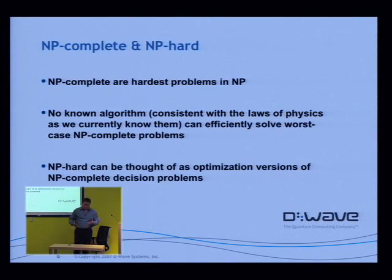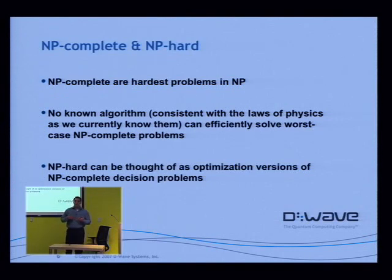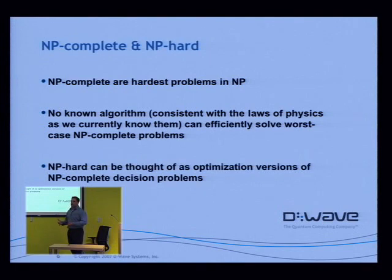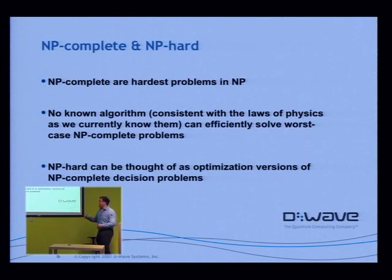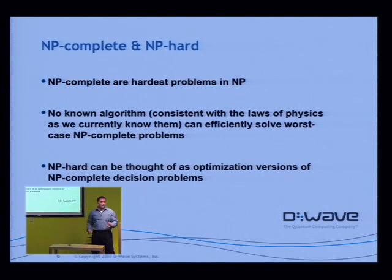NP-hard are the optimization versions of these decision problems. The one I gave before — is there a path between Vancouver and San Francisco that costs less than five dollars — that's the decision version. The optimization version would be: find me the minimum cost flight between Vancouver and San Francisco. They're almost identical in how you pose them except you're not asking 'is there,' you're asking 'what is the minimum.' When you think about NP-hard, it's just the decision problem but you're asking for a minimum or a maximum.